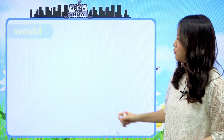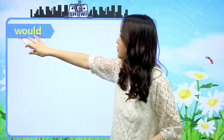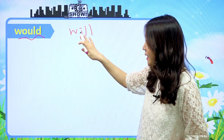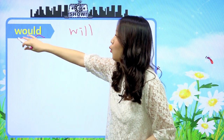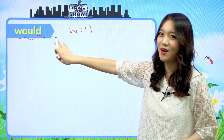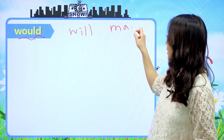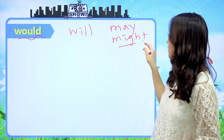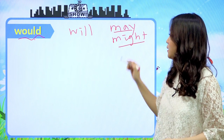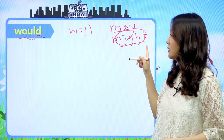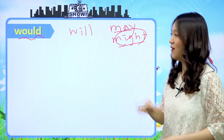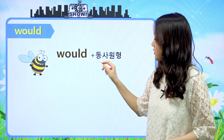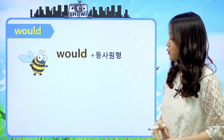첫 번째 조동사, would예요. would는 will의 과거형이에요. 근데 과거형이긴 하지만 would도 독자적인 뜻을 가지고 있어요. 우리 지난 시간에 may와 might에 대해서 공부할 때도, might는 may의 과거형이지만 독자적인 뜻을 가진다고 이야기했었죠. 같은 맥락에서 생각해 주시면 돼요. would 다음에는 동사 원형이 당연히 와야겠죠, 조동사니까.